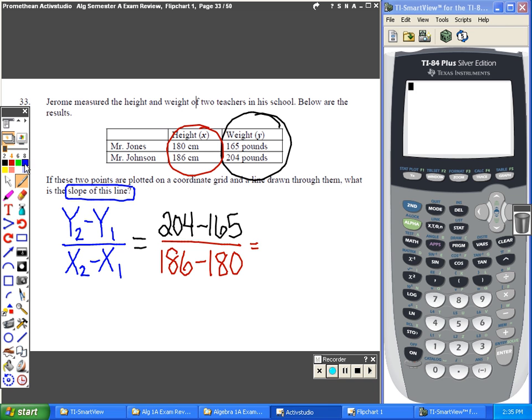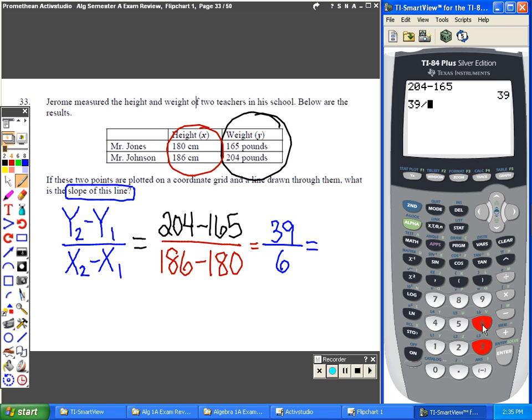The actual answer would be whatever 204 subtract 165 is over 186 minus 180, which is 6. You can write your answer as a fraction, which is 39 over 6.